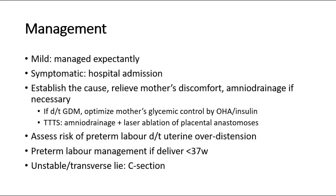Also assess the risk of preterm labor due to the overdistension of the uterus. We can do this by assessing the cervical length through ultrasound. Preterm labor management applies if delivery occurs before 37 weeks of gestation. If there is an unstable lie or transverse lie caused by the polyhydramnios, another mode of delivery we can opt for is caesarean section.